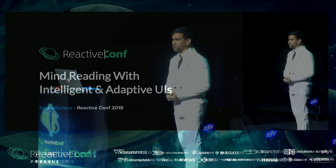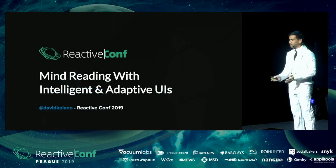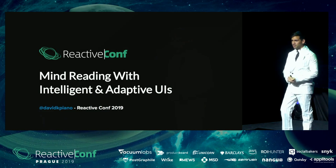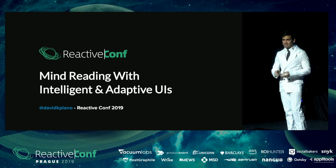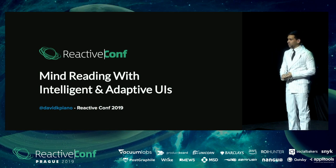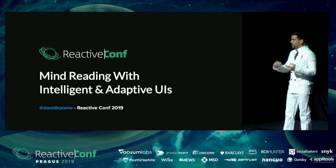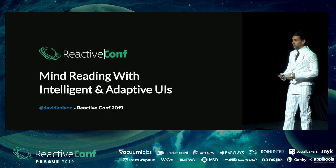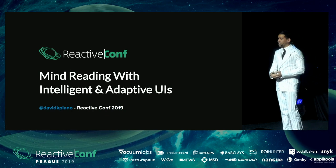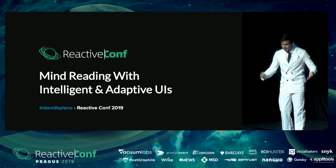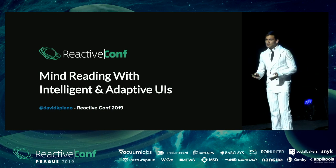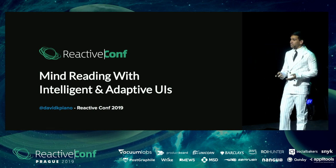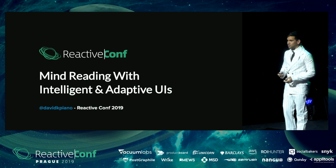Hello, everyone. My name is David Korshid. I work at Microsoft, and I am so excited to be here again in Prague. The last time I was here, I talked to you all about state charts and state machines and how they could help influence the way that we do development in a positive way. And today, on Halloween — which is why I'm wearing this costume — I'm going to be talking to you about mind reading with intelligence and adaptive user interfaces.